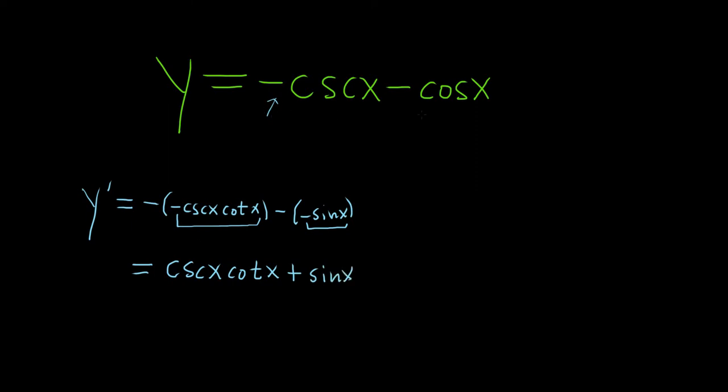So you can just go from here to here if you want. And here's how. The derivative of cosecant is negative cosecant cotangent, but the negative here will make it positive. There it is. The derivative of cosine is negative sine, but the negative here will make it positive.